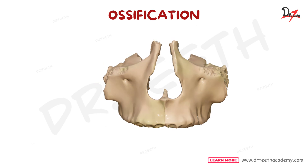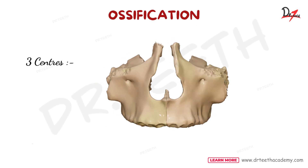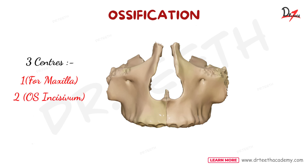Let's talk about ossification. The maxilla develops from three centers: one for the maxilla proper and two for a smaller bone called os incisivum. The ossification of these centers begins during intrauterine life at specific times. One premaxillary center appears above the incisive fossa while another forms near the nasal septum before fusing with the palatal processes of the maxilla. Although it starts to fuse early on, evidence may remain that the premaxilla is a separate bone until later in life. The development of maxilla and mandible shall be discussed in detail in the embryology section.